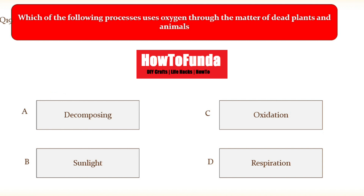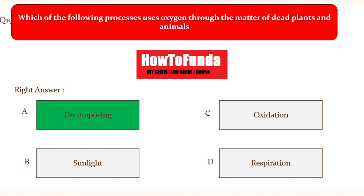Question number nineteen: which of the following processes uses oxygen through the decomposition of dead plants and animals? Option A decomposing, option B sunlight, option C oxidation, option D respiration. The right answer is decomposing.